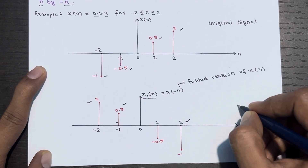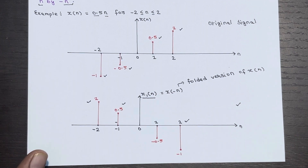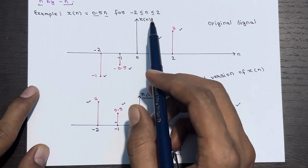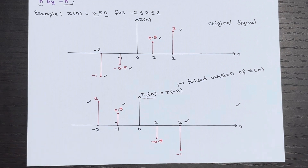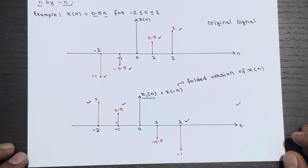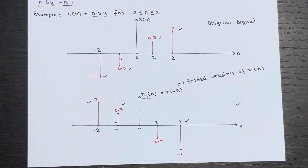X of minus n is a reflection of the signal X of n with respect to the time origin n equals 0. That's all there is to know about the folding of a discrete time signal. In our next lecture we will be diving into the topic of scaling of discrete time signals. Make sure to subscribe so you don't miss any updates, and feel free to ask questions in the comment section. Thanks for tuning in.